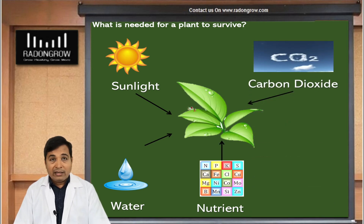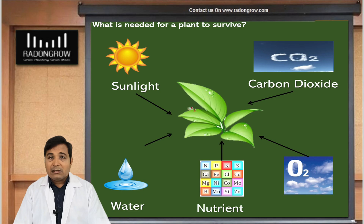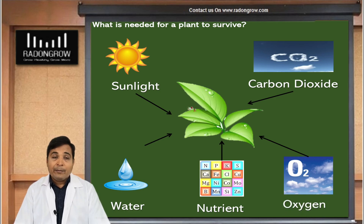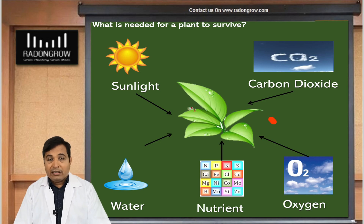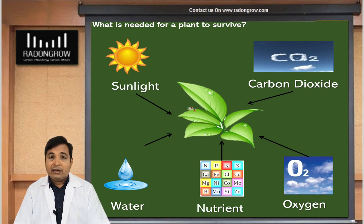The fifth parameter is oxygen — the plant root system requires oxygen. So these five parameters we must maintain to grow a plant. Please remember these five parameters to grow a healthy plant. Further, we will discuss another five parameters required to maintain in a hydroponic system.